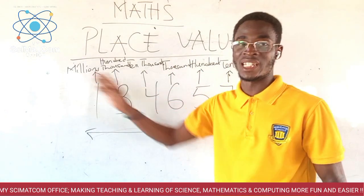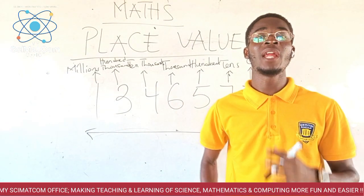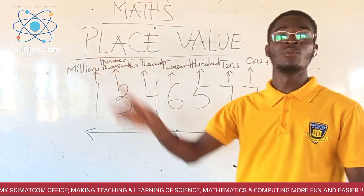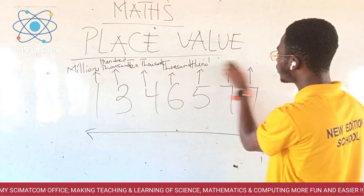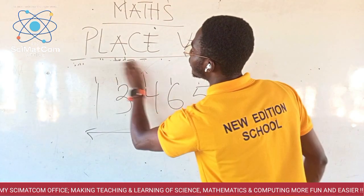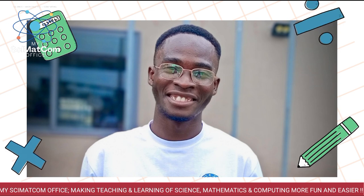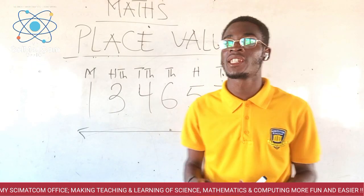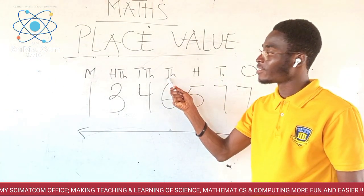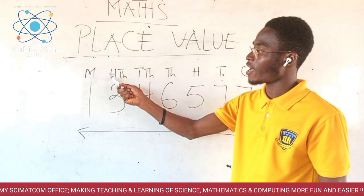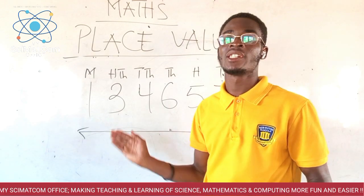Our focus will be on millions for now. Each of these digits we have given them places, and the place of each digit here has now been labelled on the board. So let me now use alphabets to identify each of the places I've listed. With alphabets, we have ones, tens, hundreds, thousands, ten thousands, hundred thousands, million.